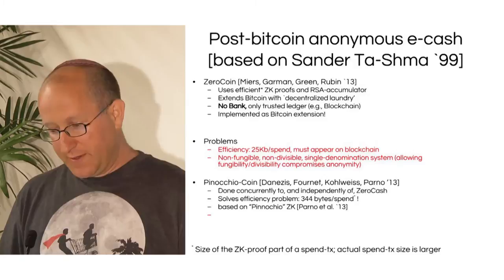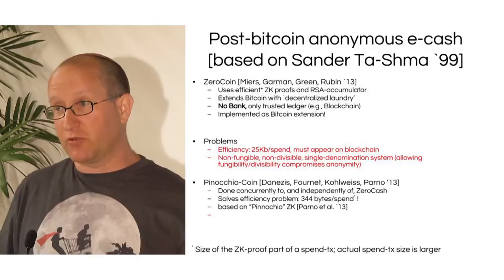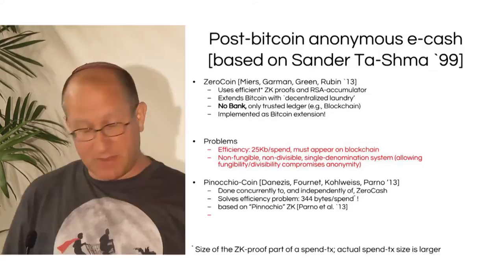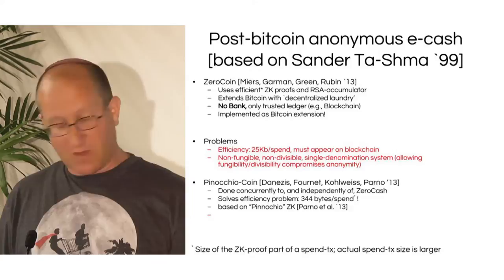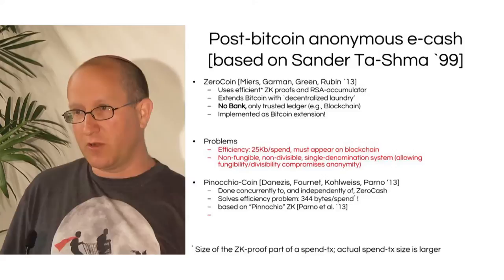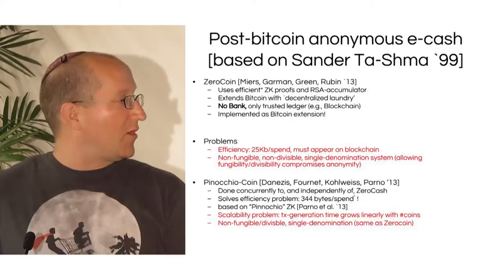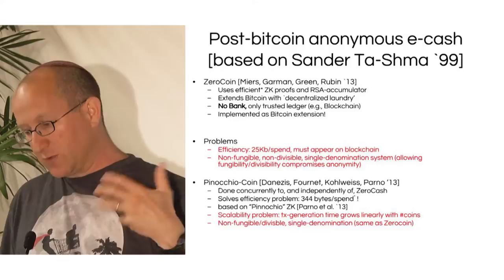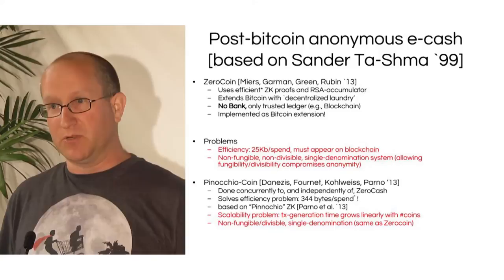Independent of our work, Danezis, Fournier, Kohlweiss, and Parno published Pinocchio Coin, addressing the efficiency problem of 25 kilobytes per spend transaction. They reduced it significantly to 344 bytes, based on the Pinocchio zero-knowledge system of Parno et al. These proof-length measurements refer to the zero-knowledge proof itself. However, the problems with Pinocchio Coin were scalability — transaction generation time grows linearly with the number of coins ever used — and it was still non-fungible and non-divisible, requiring single-denomination coins.